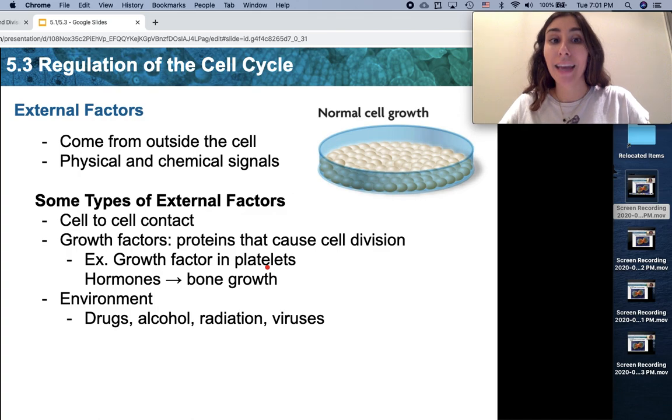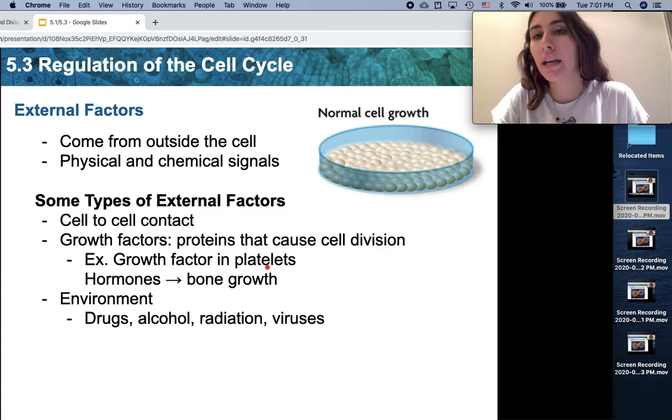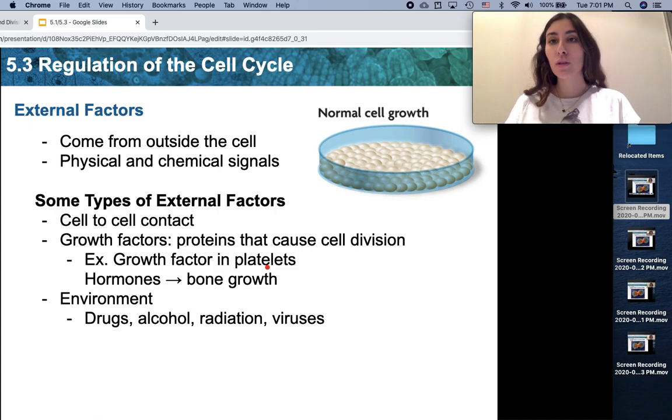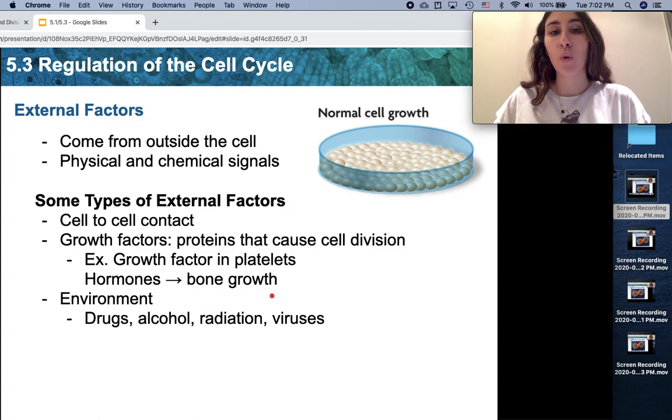Some people who go to the gym take growth factor as an injection, and this is a very unhealthy practice. There's so many side effects to doing this. Basically, some people want to grow muscle and they don't want to work hard for it, so instead they'll just take a growth factor, which is almost like a form of a steroid, and this will cause their muscles to grow without them really working out. Another example of an external growth factor are hormones. They regulate the growth of so many parts of our bodies, like bone growth. The reason why our bones elongate and grow as we age is because growth hormones tell your bones to elongate and grow.